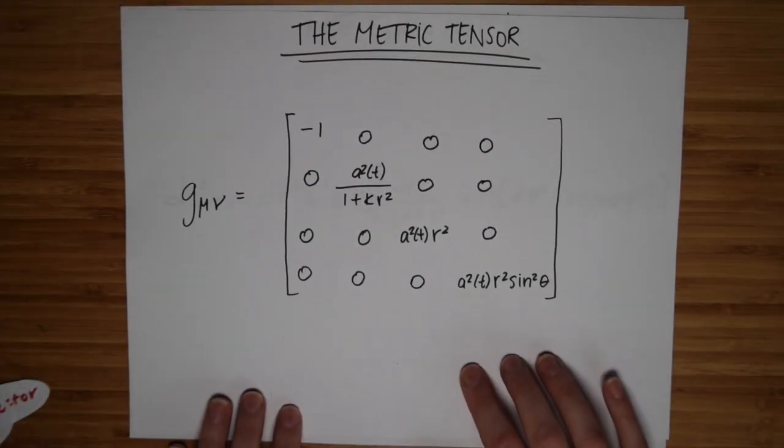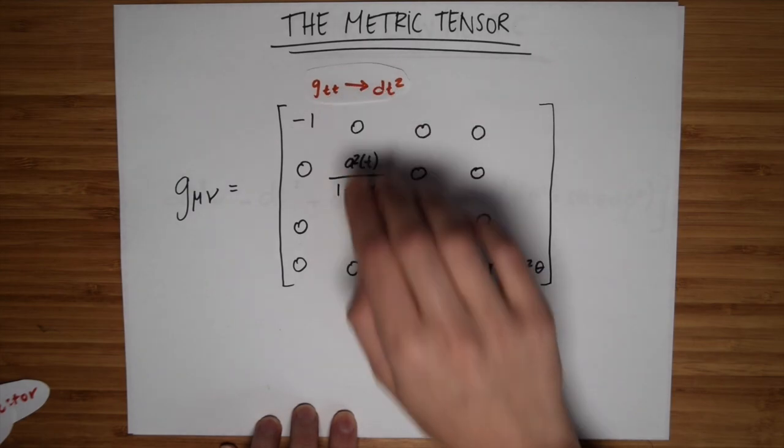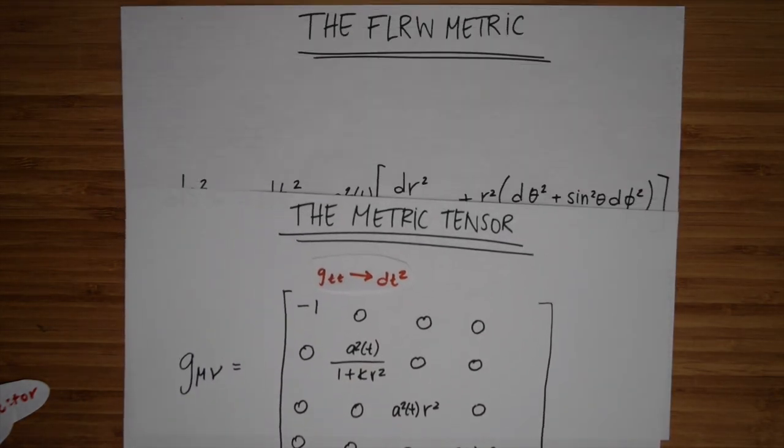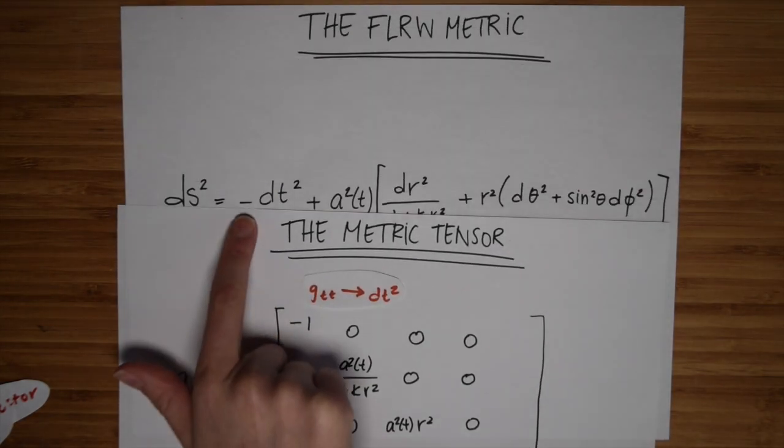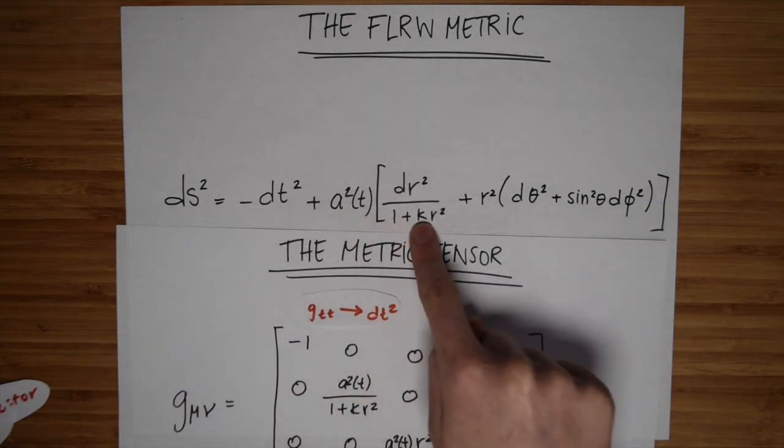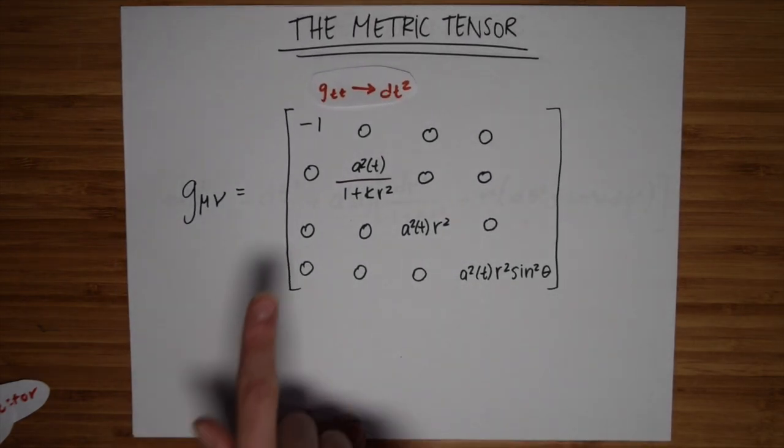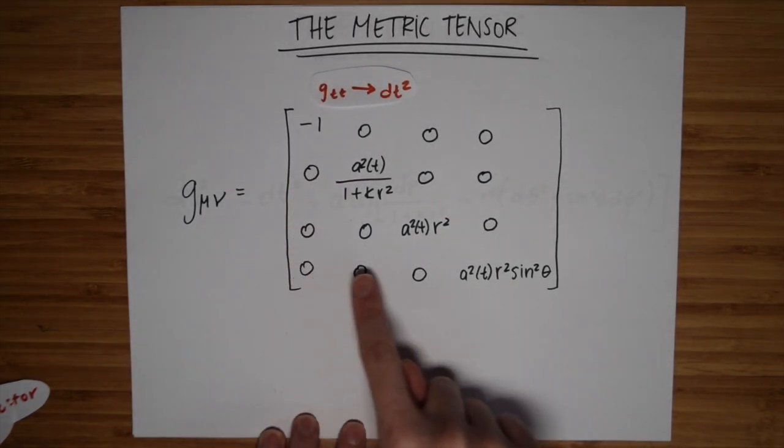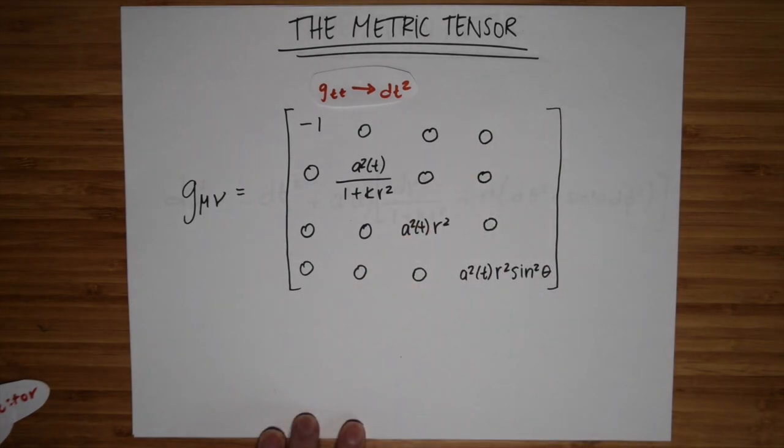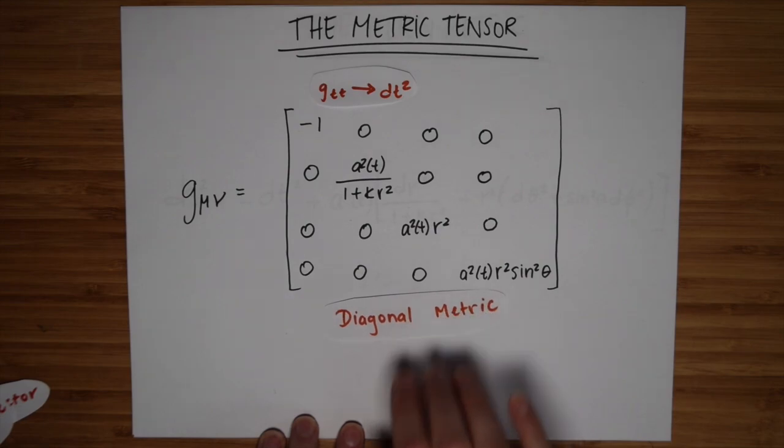You can also represent this information as a metric tensor like this. So here, this GTT entry corresponds to the coefficients of the dt squared term. The next entry along the diagonal corresponds to the dr squared term and so on. As you can see, there are no entries on the off-diagonal because there were no cross terms like, for example, dr d theta in the equation of our metric. We say that the metric is diagonal.